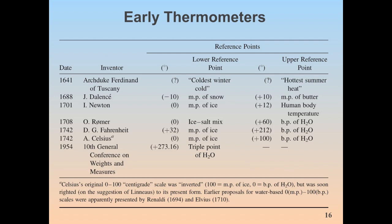In 1708, Rømer used an ice-salt mix at zero and plus 60 as the boiling point of water. Then Fahrenheit used plus 32 for ice and plus 212 for the boiling point of water, and Celsius's scale was inverted after his death. In 1954, they set the triple point of water as the reference point — an invariant point at only one pressure and temperature — along with absolute zero as the lower bound. That's how we define the Celsius and Kelvin scales today.